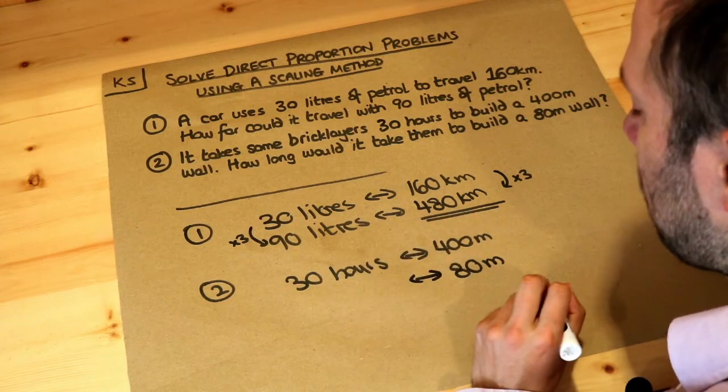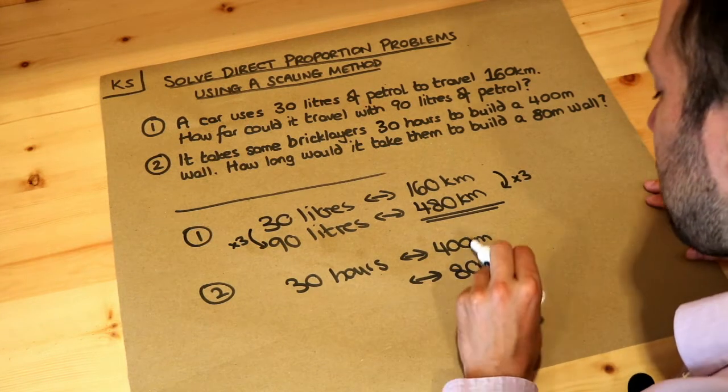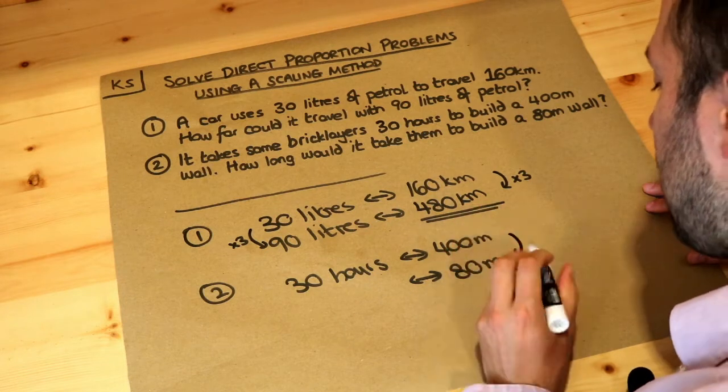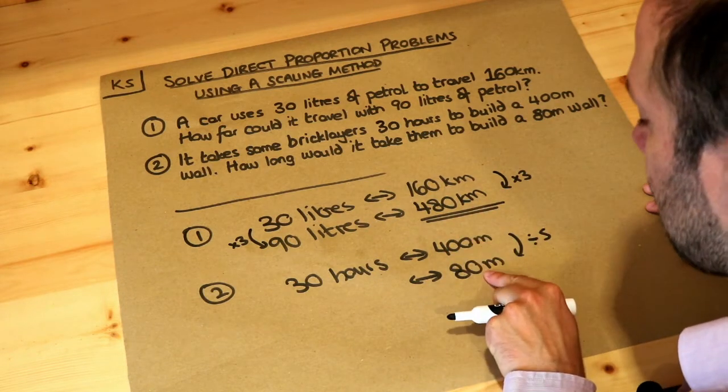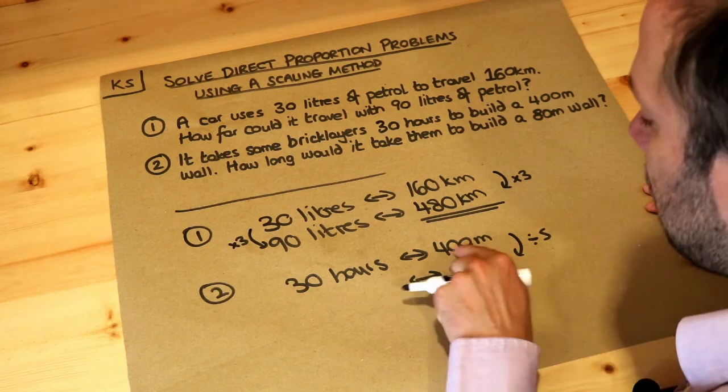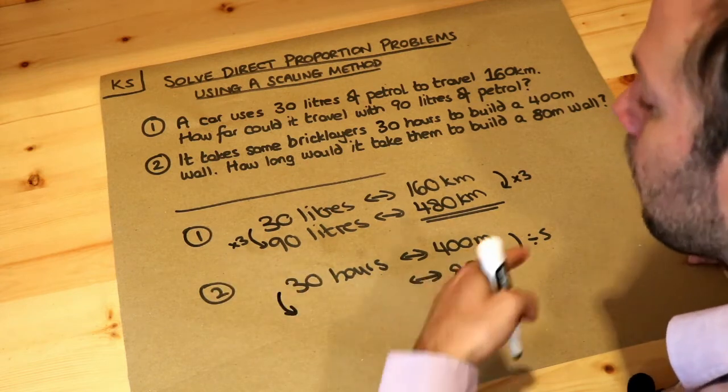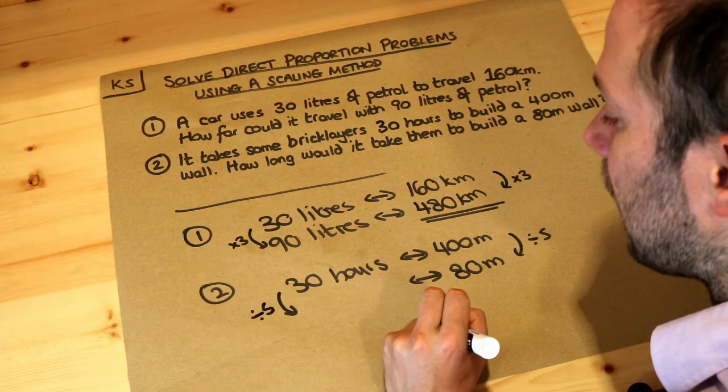Now this time we're building a smaller wall, so it's going to take less time for those brick layers. Now let's see how many times smaller it is. Can you see this is getting five times smaller? To get from 400 to 80, it's five times smaller. You can just divide the two numbers. That means the amount of time, because these are directly proportional, is also going to be five times less time.